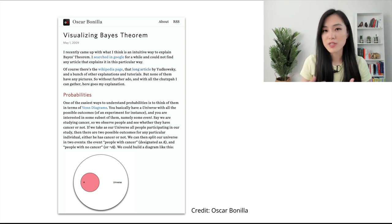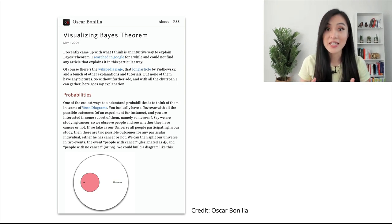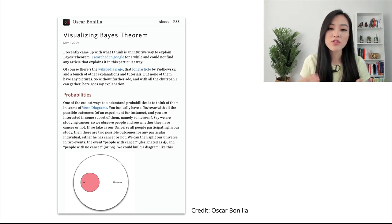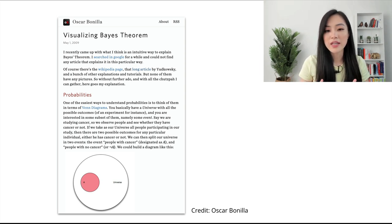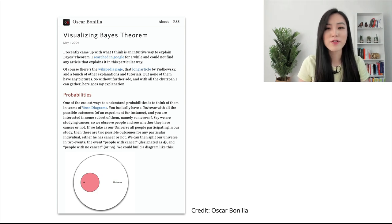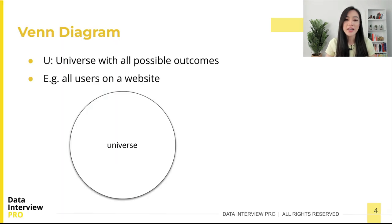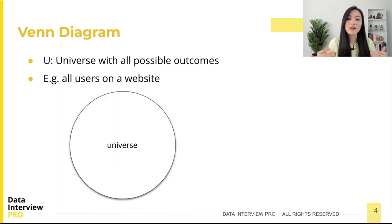To understand it intuitively, let's use visualizations to derive Bayes' theorem. I'm going to borrow the idea presented in an amazing blog post by Oscar Bonilla. This post does a great job of explaining the concept intuitively — I have the link in the video description. The idea is to use a Venn diagram to visualize probabilities.